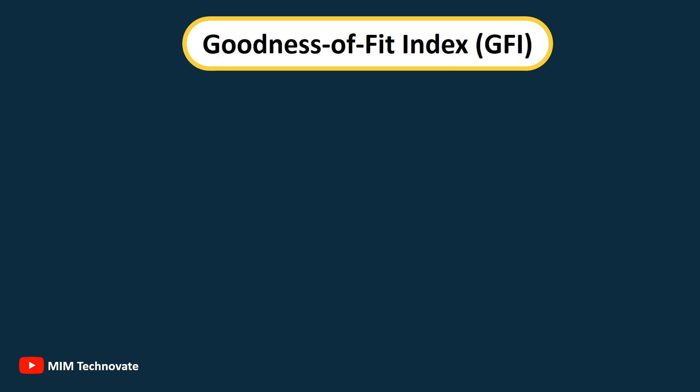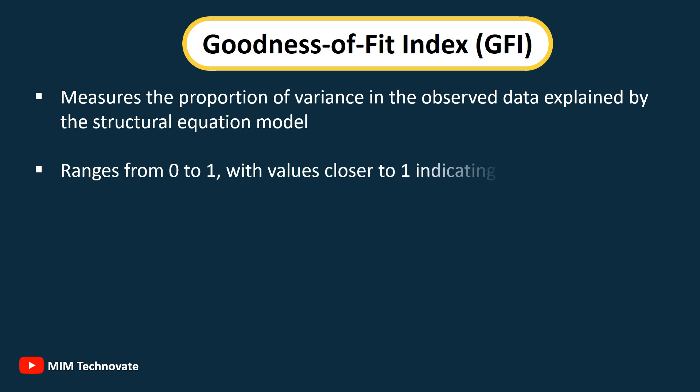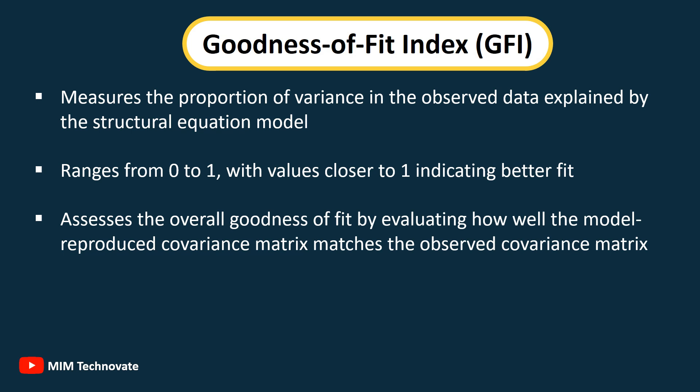Goodness of Fit Index (GFI): Measures the proportion of variance in the observed data explained by the structural equation model. It ranges from 0 to 1, with values closer to 1 indicating better fit. GFI assesses the overall goodness of fit by evaluating how well the model-reproduced covariance matrix matches the observed covariance matrix.